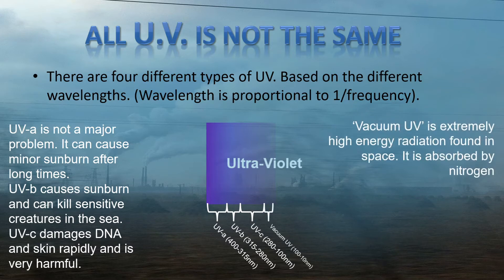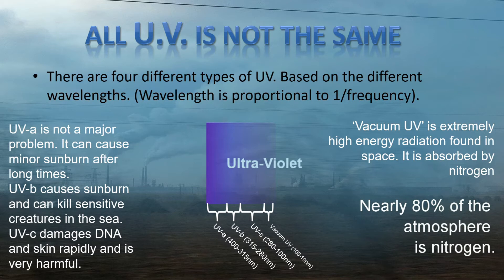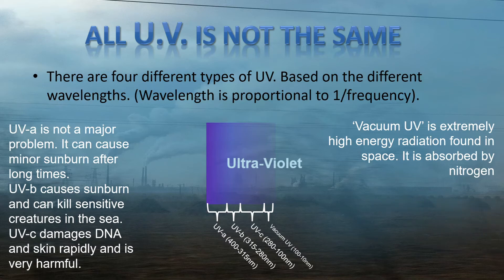Vacuum UV is extremely high-energy radiation found in space. It is absorbed by nitrogen, and since nearly 80% of the atmosphere is nitrogen, it is not a major problem. Vacuum UV is 100 down to 10 nanometers.